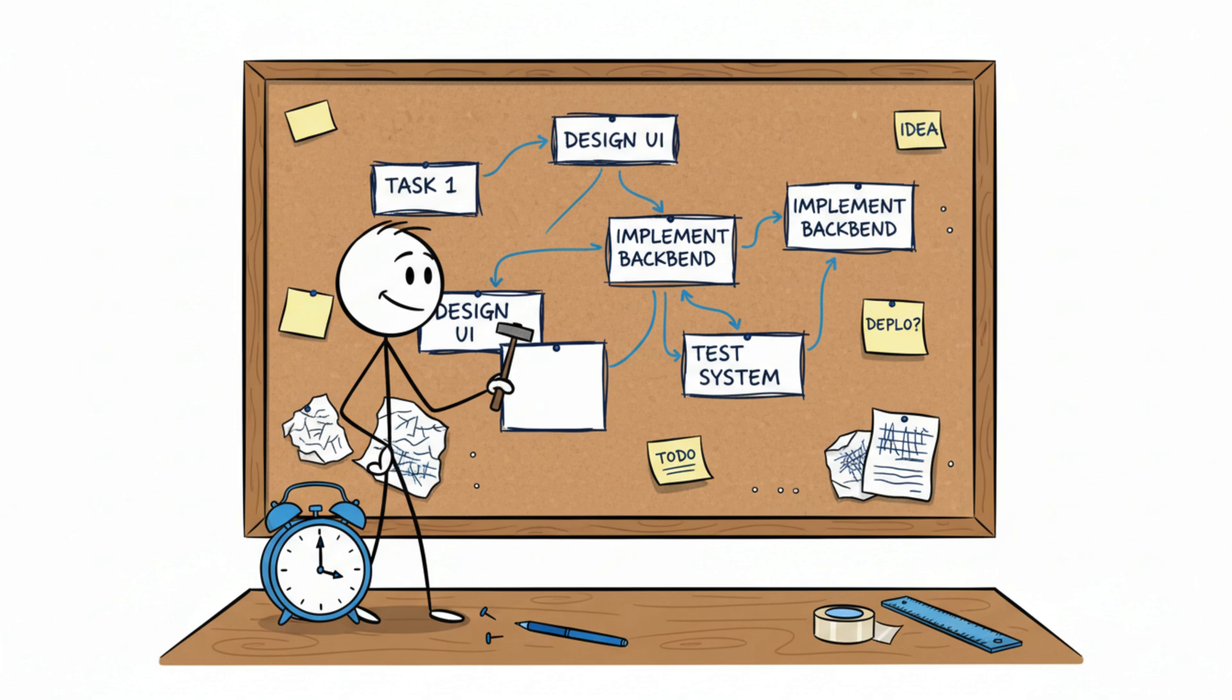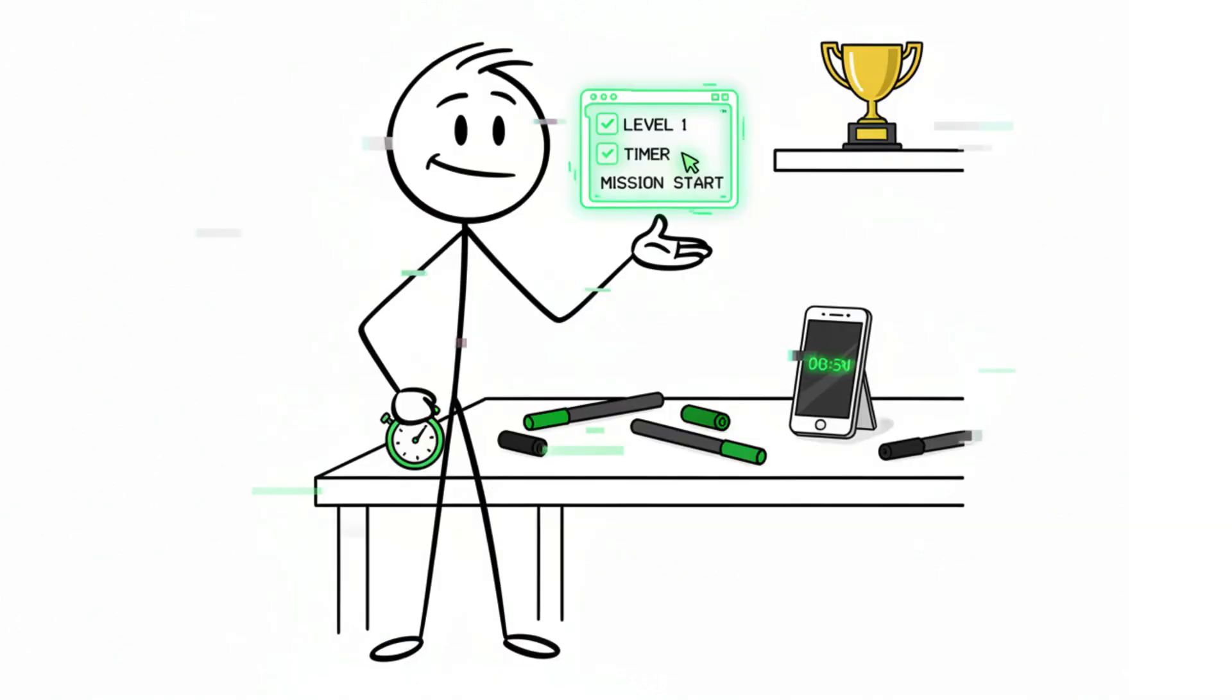You can fix that by creating systems. Count task scores. Race the clock. Assign levels and missions instead of vague goals.